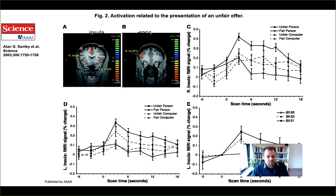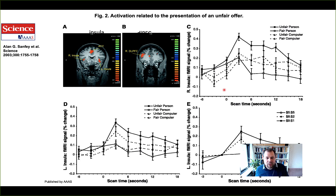What we can see is a network of regions consisting of right and left anterior insula, anterior cingulate cortex, and lateral prefrontal cortex that respond to unfair offers relative to fair offers. At the zero point — the onset of when you find out whether you received a fair or unfair offer — there's an increased response in this region to unfair offers, shown in the black line with filled squares, and a decreased response to fair offers, in the black line with open squares.